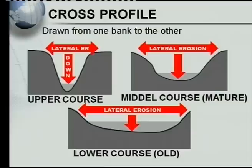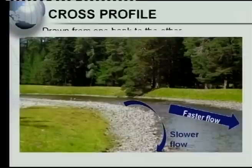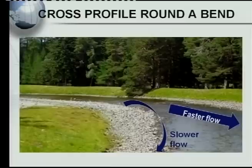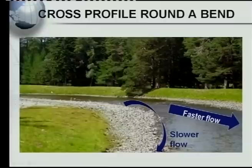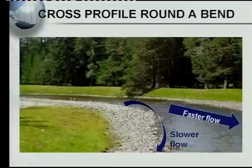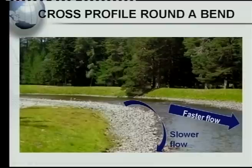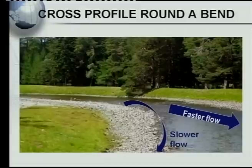In the lower course, as the river reaches the sea, it is at its widest. The river is flowing much slower, with the result that deposition takes place. Now, what happens if a river flows around a bend, or meanders? Looking at this photo, the river flows around a bend. On one side the river flows much faster, but on the other side — the sharp turn — the water flows much slower.